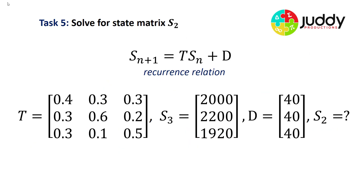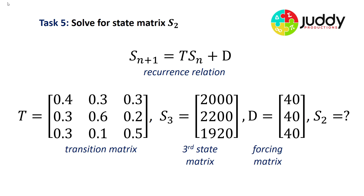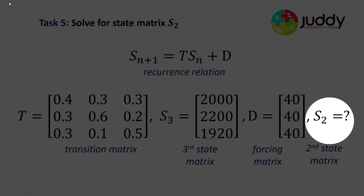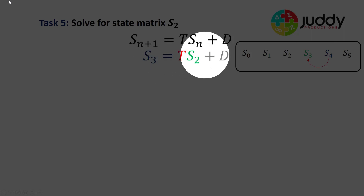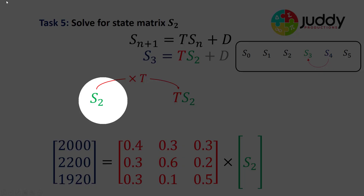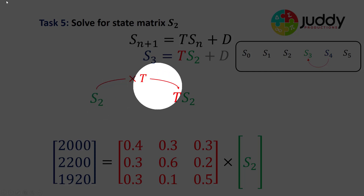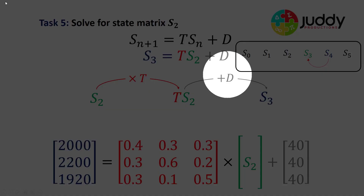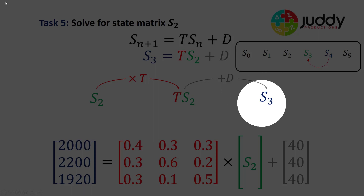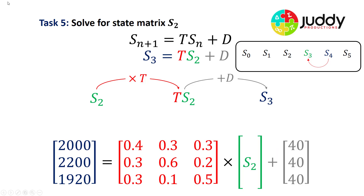Moving backwards this time: we have the same recurrence relation, the same transition matrix, the same third state matrix, and the forcing matrix D — but this time we're working backwards to the second state matrix; S2 is our unknown. We're looking at the transition from S2 to S3: first multiply by the transition matrix, then add the forcing matrix to generate the S3 matrix.